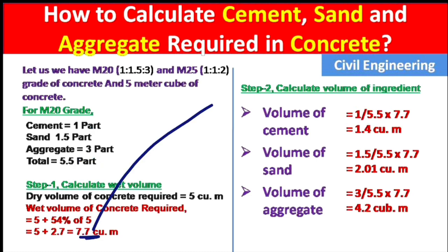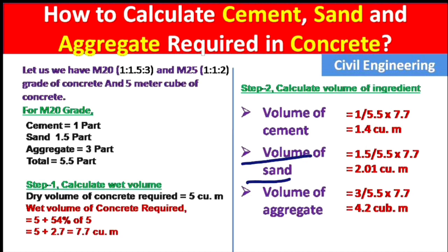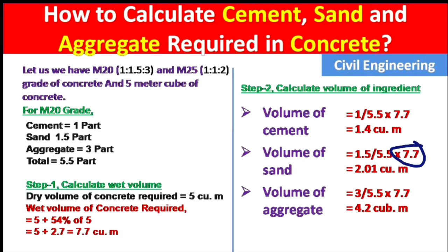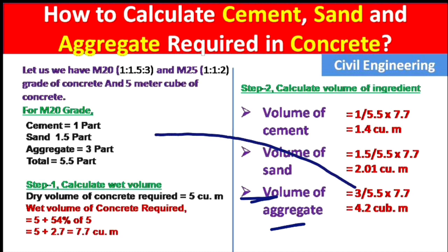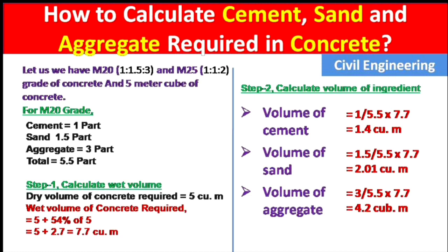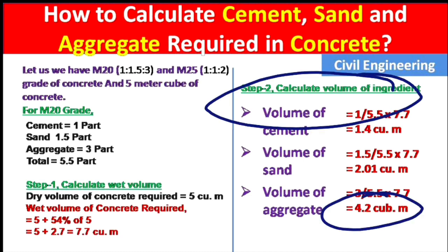Dividing 1 by 5.5 and multiplying by 7.7 cubic meters, we get 1.4 cubic meters of cement. For volume of sand: part of sand is 1.5, divided by total parts 5.5, multiplied by 7.7 — we get 2.01 cubic meters. For volume of aggregate: part is 3, divided by 5.5, multiplied by 7.7 — we get 4.2 cubic meters. So we have calculated all ingredients for M20 grade of concrete.